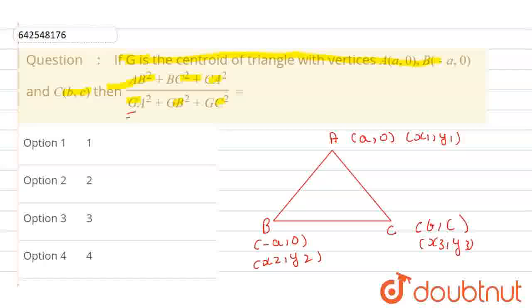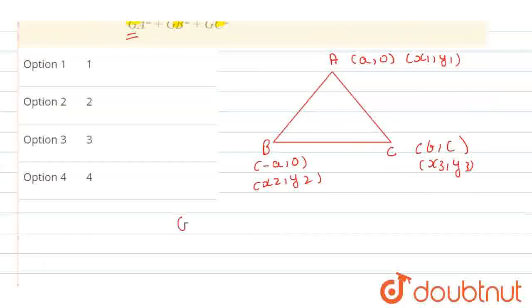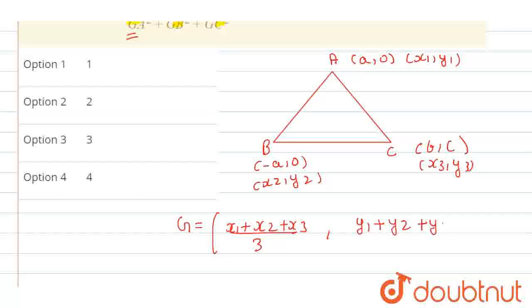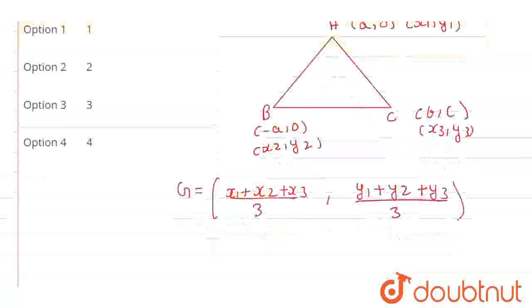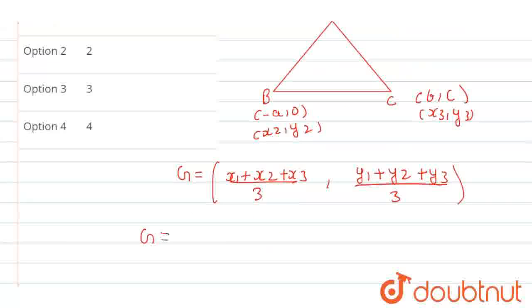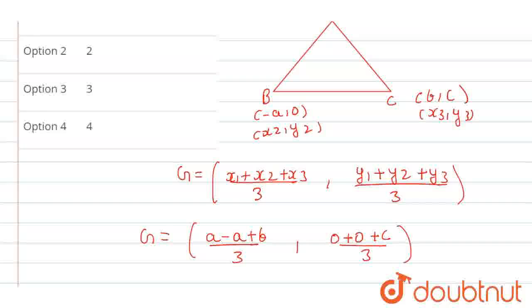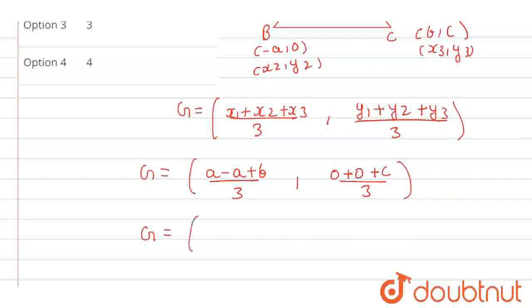Now, C value is given as (b, c) — let's suppose this is equivalent to (X3, Y3). First of all, we need to find G here, and G is the centroid. We know the centroid formula: G equals (X1 + X2 + X3)/3 , (Y1 + Y2 + Y3)/3. When we put our values in, G becomes (a + (-a) + b)/3, (0 + 0 + c)/3, so G = (b/3, c/3).